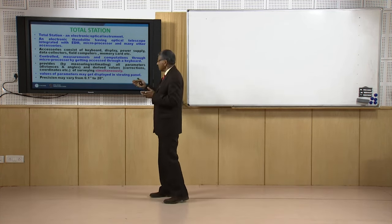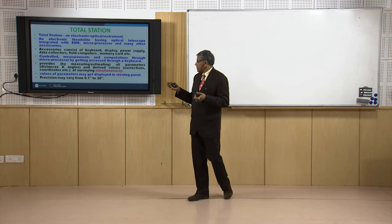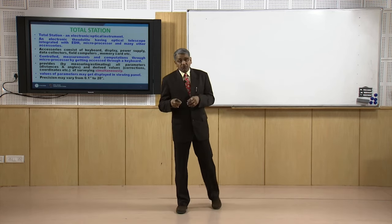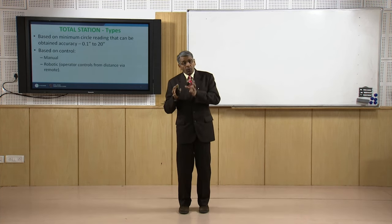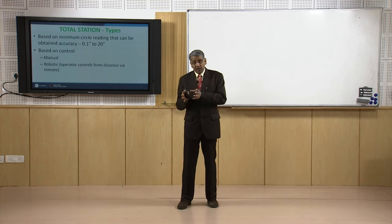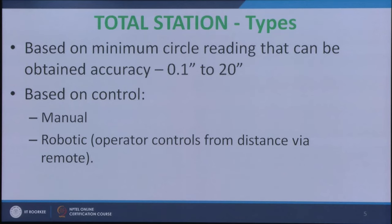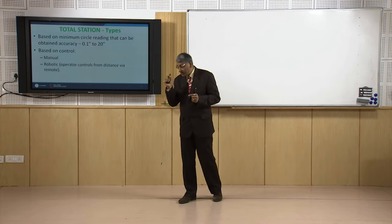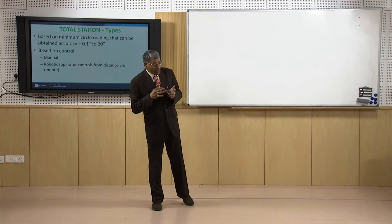These results are available in the display unit as well as stored inside the memory of the total station. Now, total stations actually vary — there are different types of total stations depending on how accurately they carry out the measurement. The type of total station is defined by the least count of the circle reading.